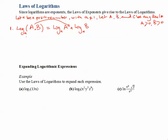And the second law will be when you have a divided by b, a over b. So it's log base a of a minus log base a of b. And again, division becomes subtraction.